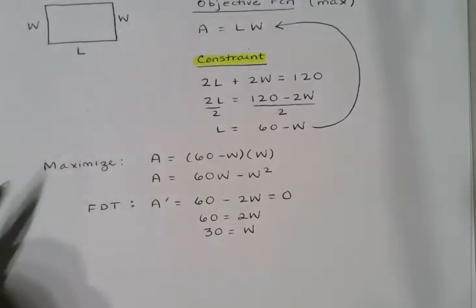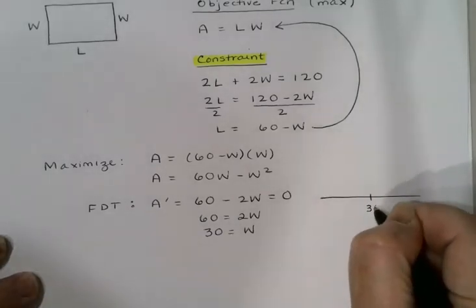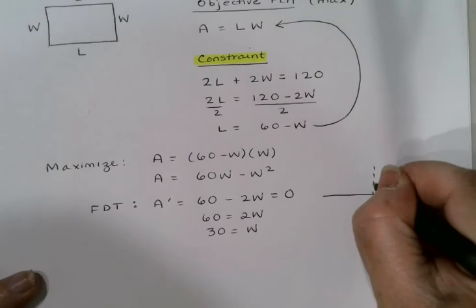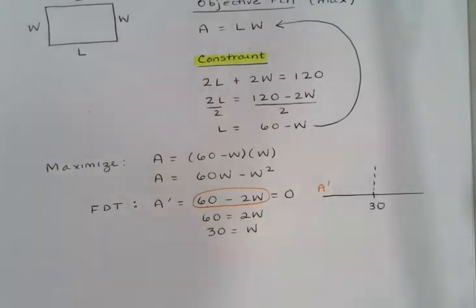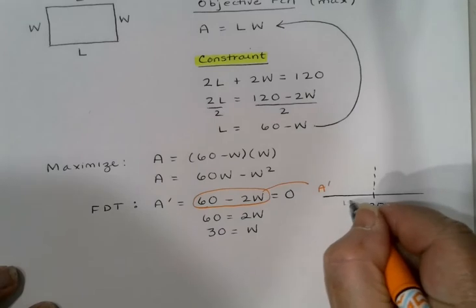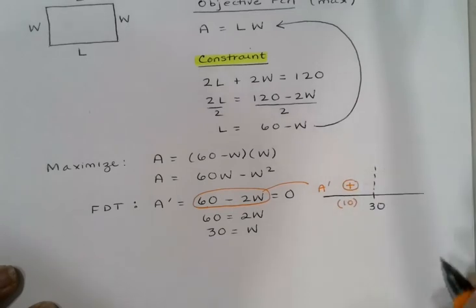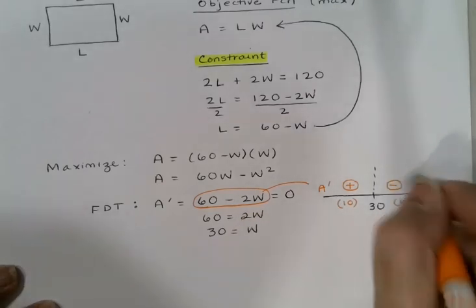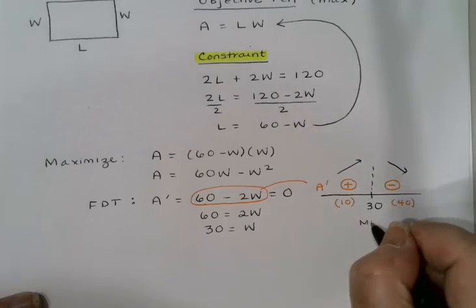I can take a quick check and make sure that's really a maximum. If I pick a test value like maybe 10, 60 - 20 would be positive, and perhaps 40, 60 - 80 would be negative. Increasing to decreasing, and that really is the max that I was looking for.